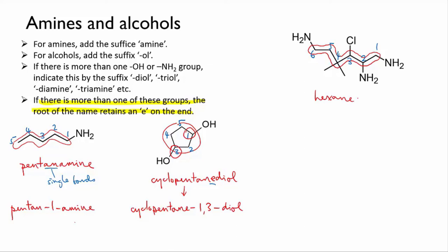So that gives us hexane-1, 2, 6-triamine. Again, note that we're keeping the E on the end of hexane because there's more than one of these functional groups.